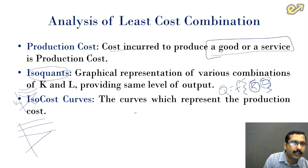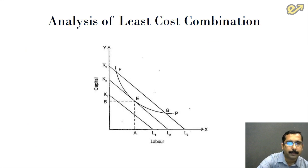So here we have understood the three basic concepts which are necessary for us to analyze the least cost combination. First is the production cost, second is isoquant, and third is the isocost curves. Now let us try to bring in all these concepts together. Here is a graph which has two axes: the Y-axis here and the X-axis on the other side.